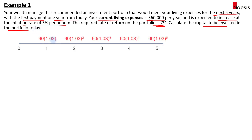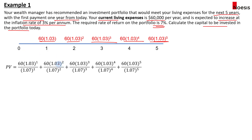Looking at the timeline: from year 1, we have $60,000 (current living expenses at time 0) times 1.03 (the inflation rate). This is what the portfolio needs to generate for years 1 through 5. If we discount all these cash flows at 7%, we get the present value of these cash flows.